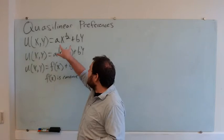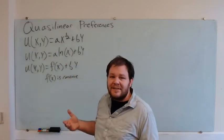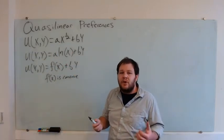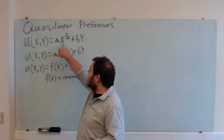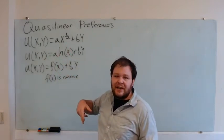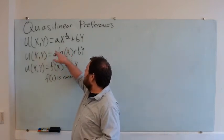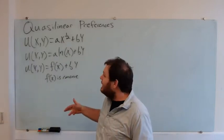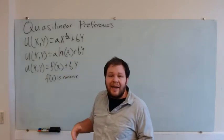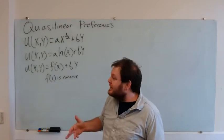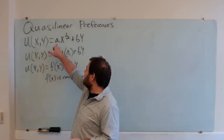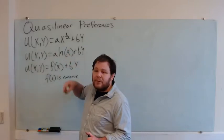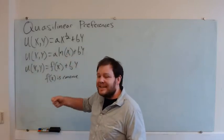Good x acts more like a good in a Cobb-Douglas case, where we have these diminishing returns. The first unit of x gives us utility of a. If we go up to four units — add another three — that's going to give us utility of 2a. If we add another five to get up to nine, that's going to give us utility of 3a. So each unit of x is providing us less and less utility.